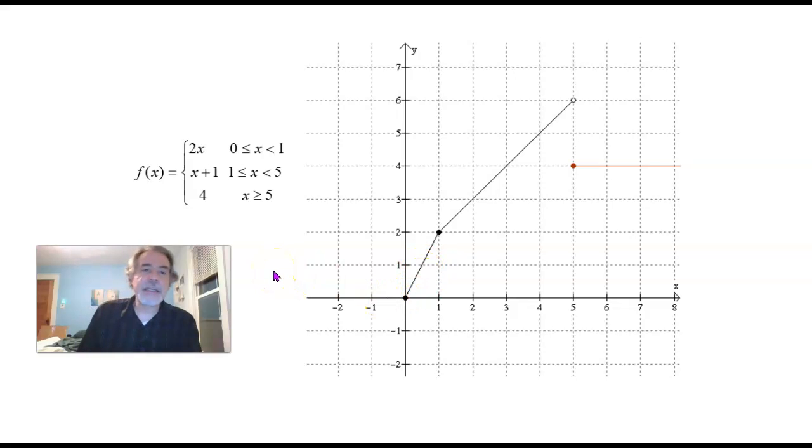What about if X is 3? Well now we're into this region. 3 is between 1 and 5, so we do this to it. We take 3 plus 1 and we get 4. What's f of 2? Well that would be 2 plus 1, which is 3.